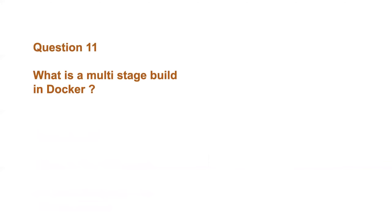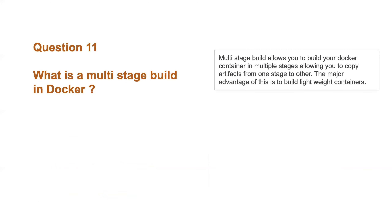Question eleven: what is a multi-stage build in Docker? Previously, everything in a Dockerfile happened in a single stage. With multi-stage builds, you can define separate stages — for example, a first stage for building a UI component and a second stage for building a backend component — and then pass artifacts from both into a final stage.